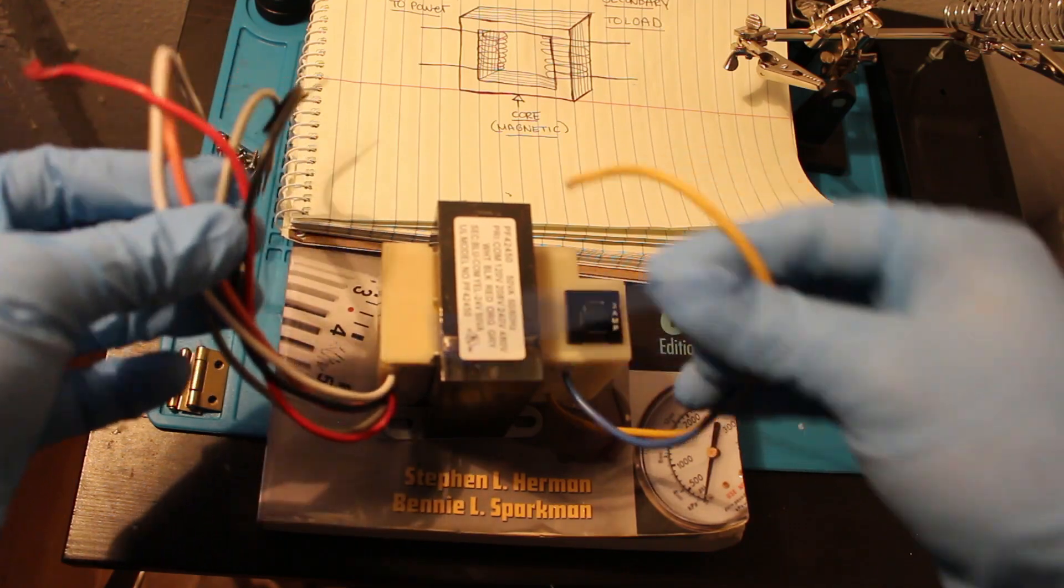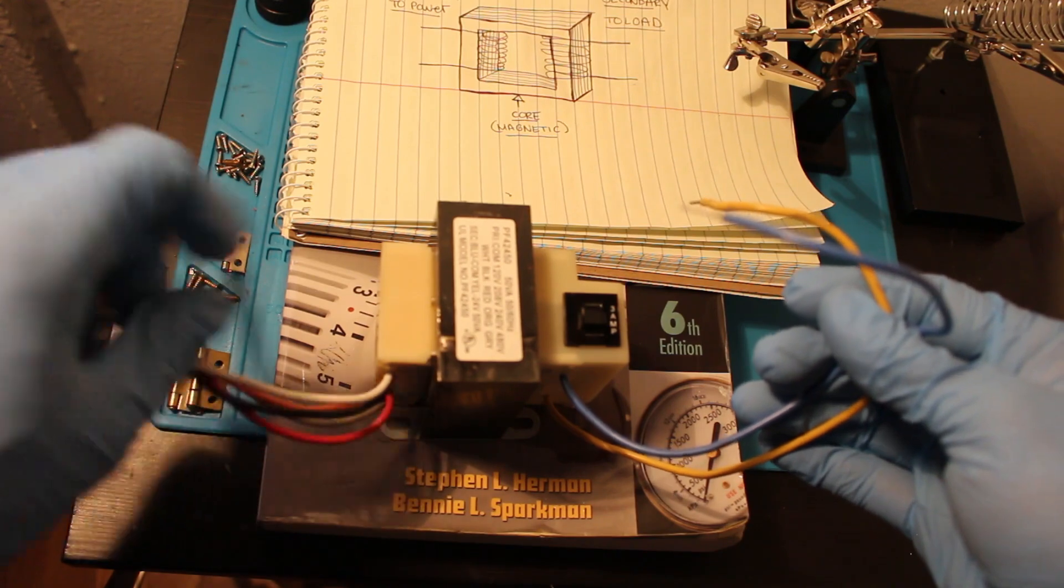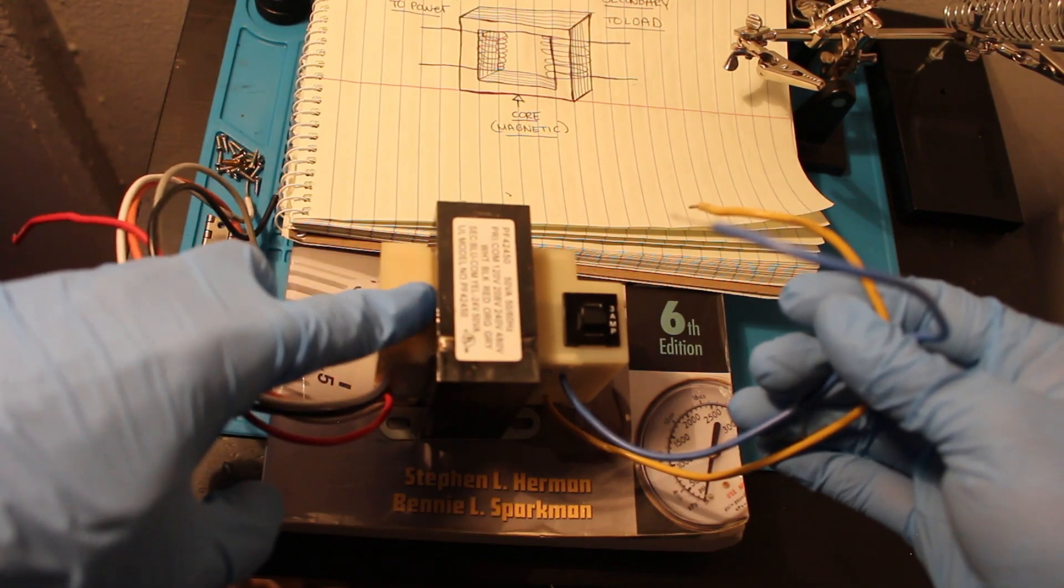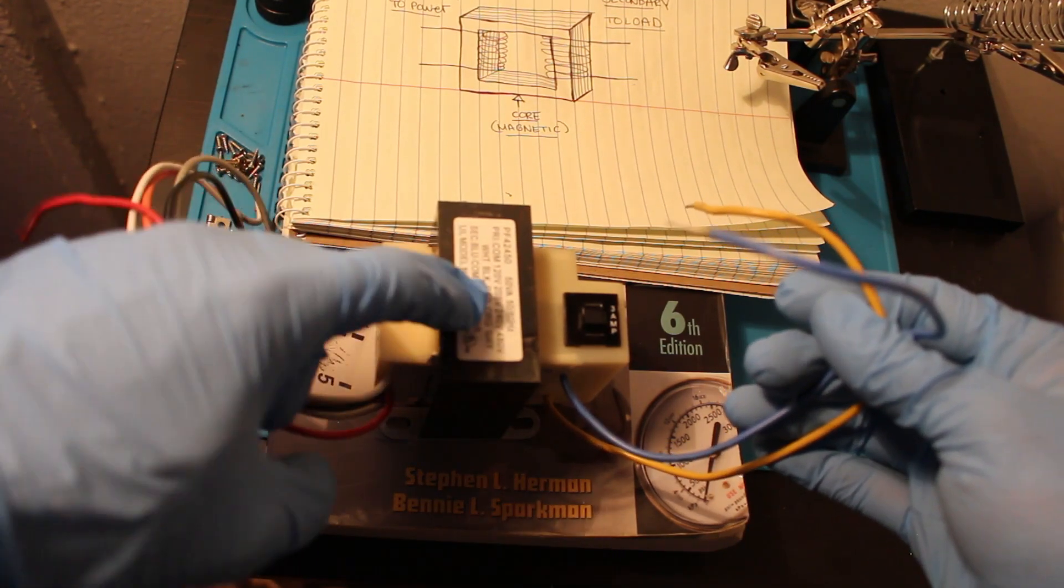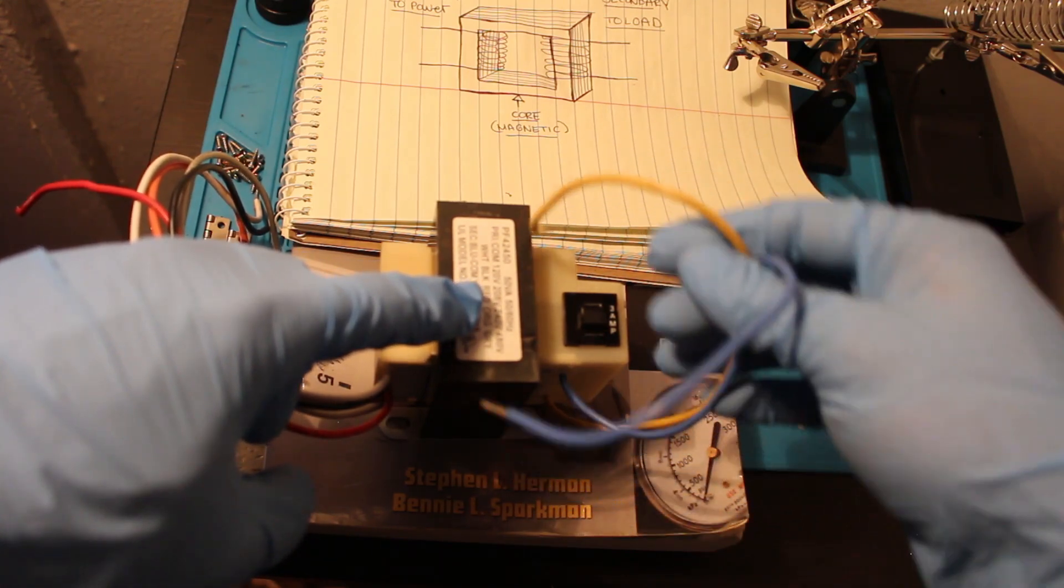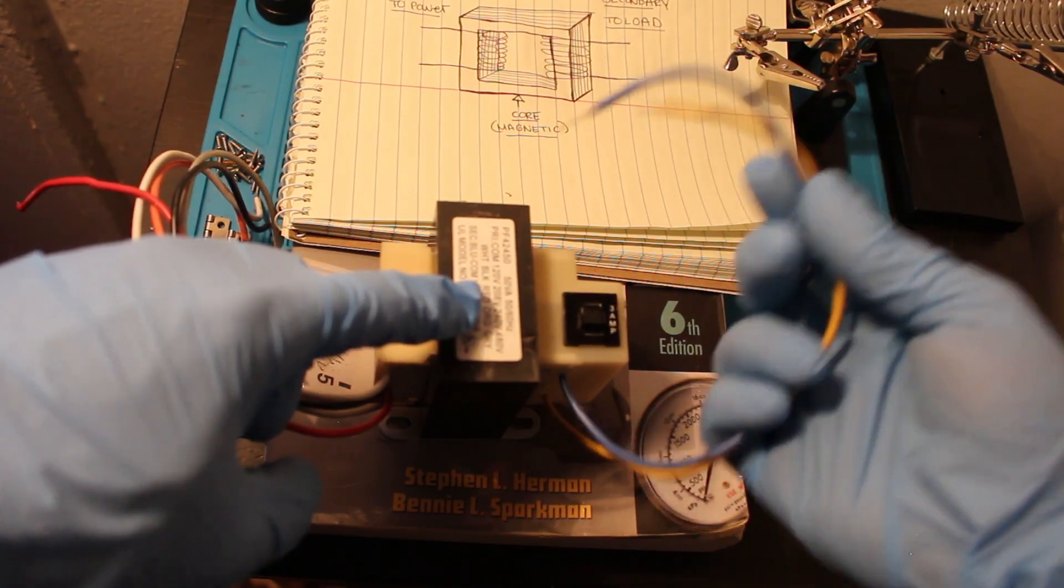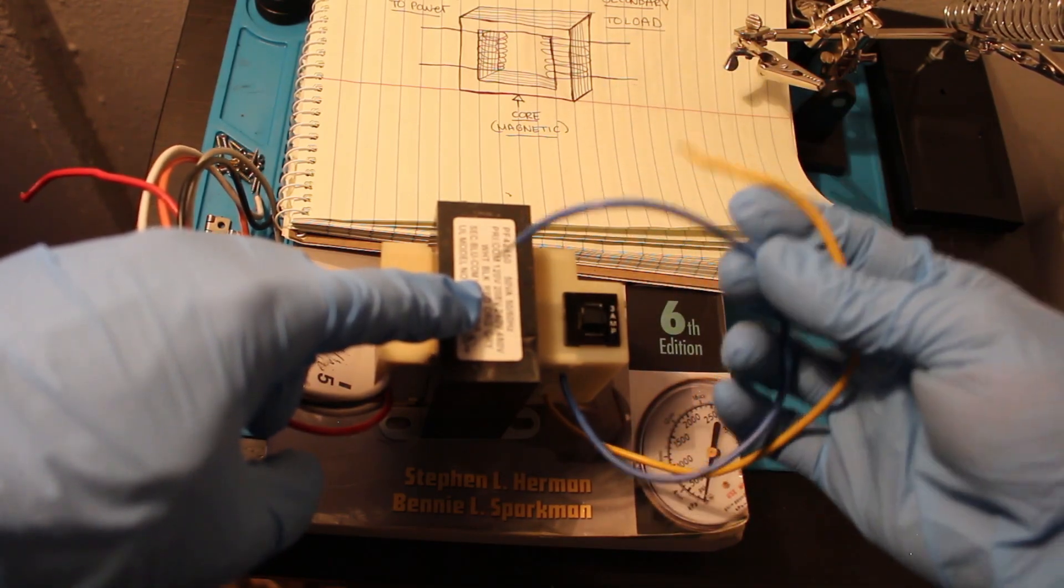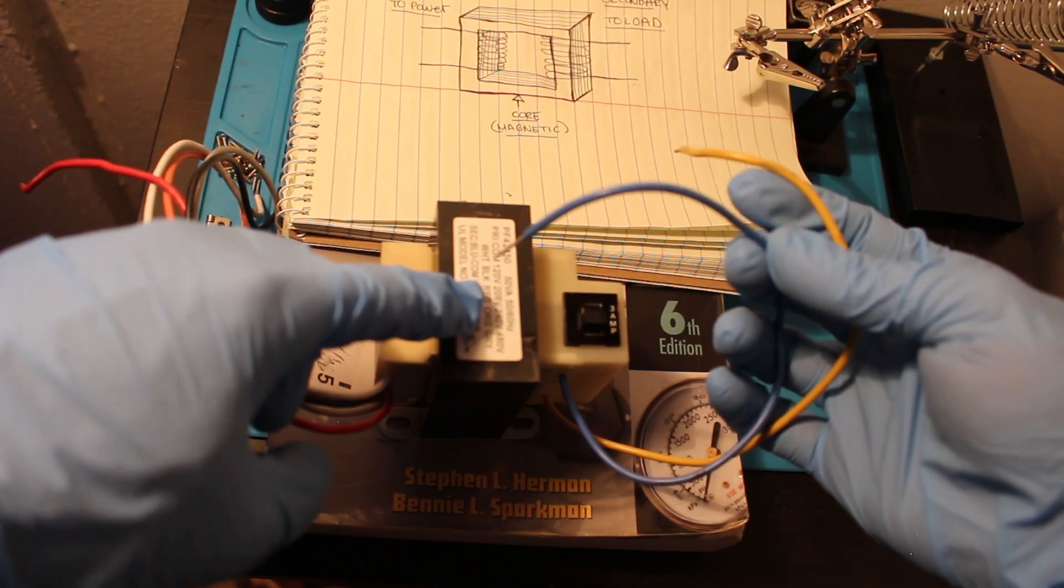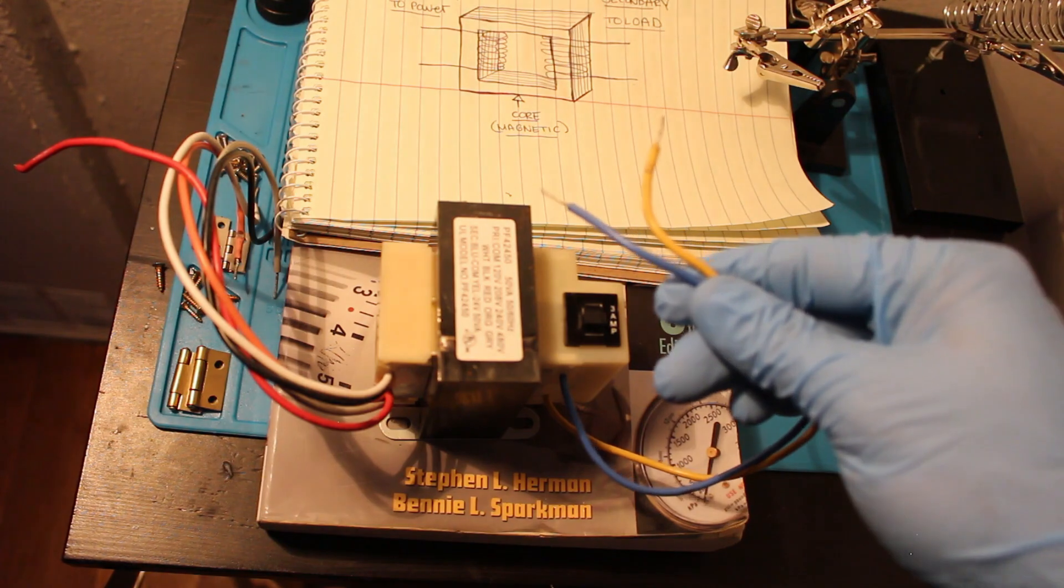So the way this would work is that once your primary is energized, it will create a magnetic field around the core. And since this winding is wound around the same core, it will induce a voltage and energize this side of your transformer. And this side of your transformer goes to your load and your control circuit.